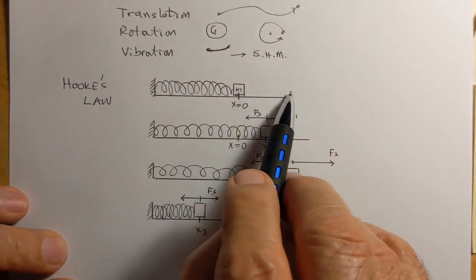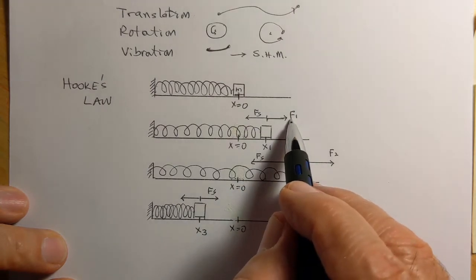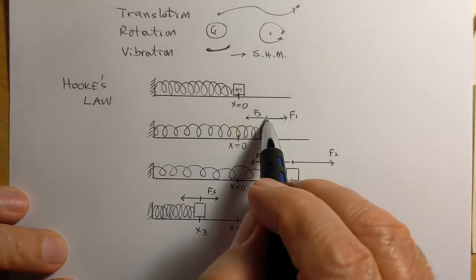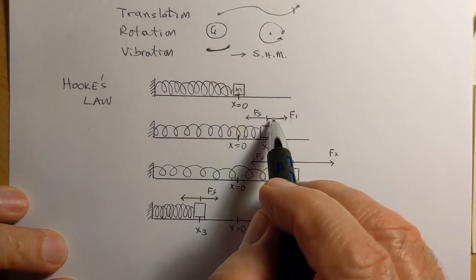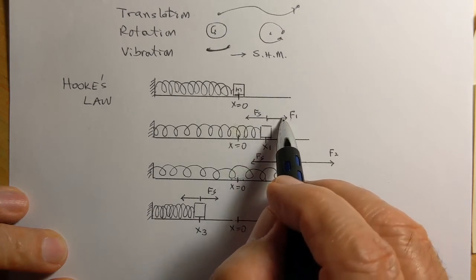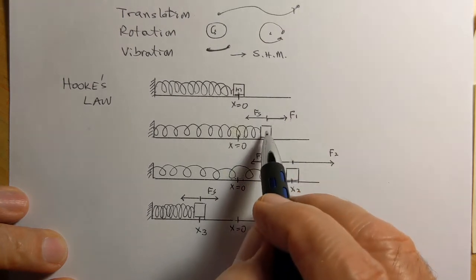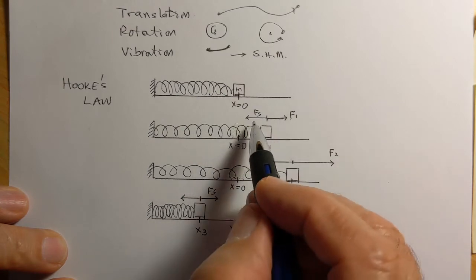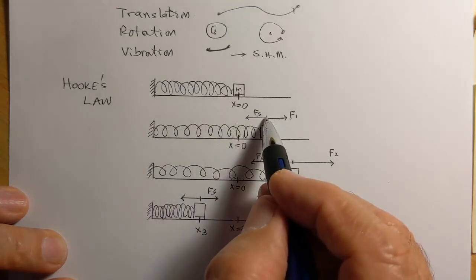Now we apply a force to the right, and we apply a force F1. We stop, so we are applying a force F1 and we're not pulling it any further.